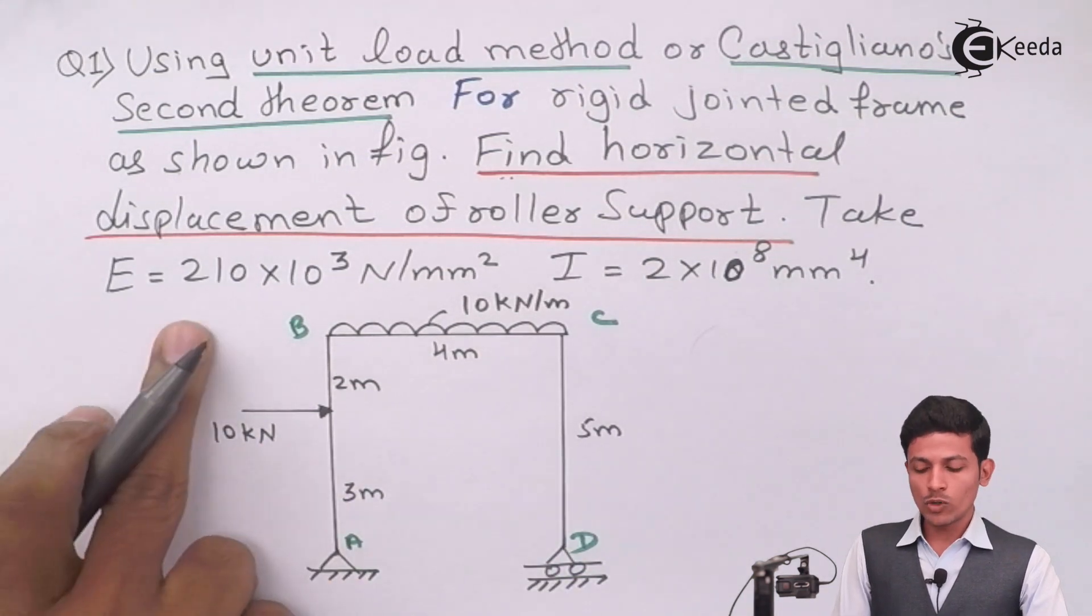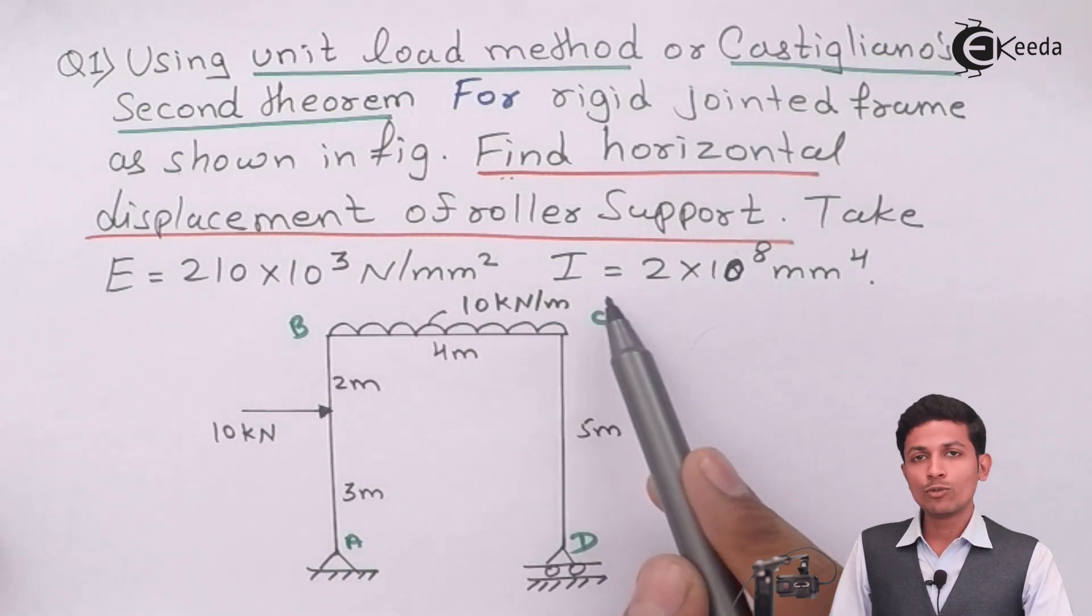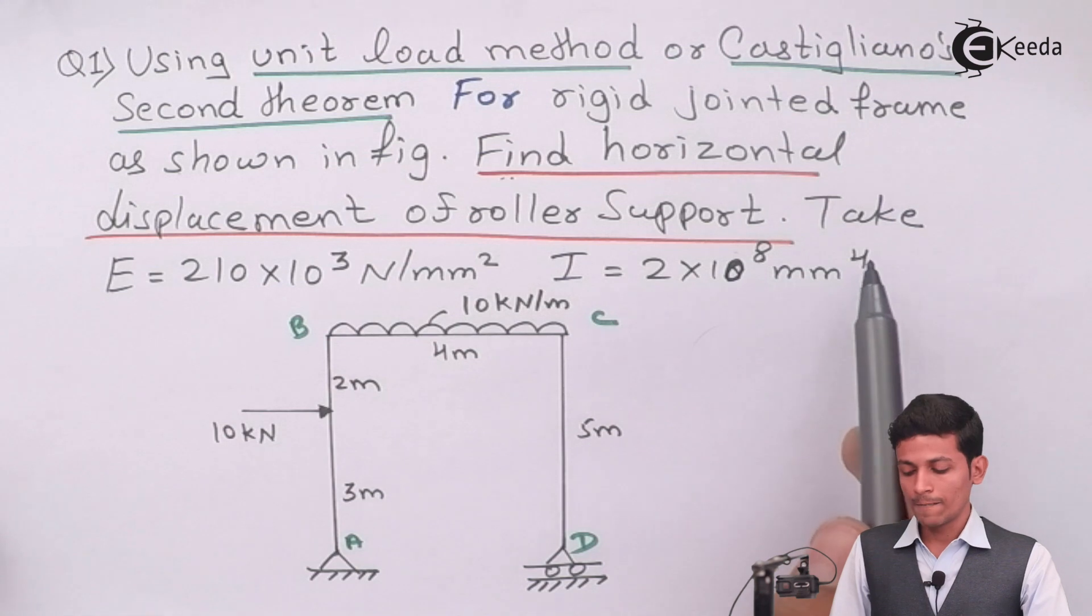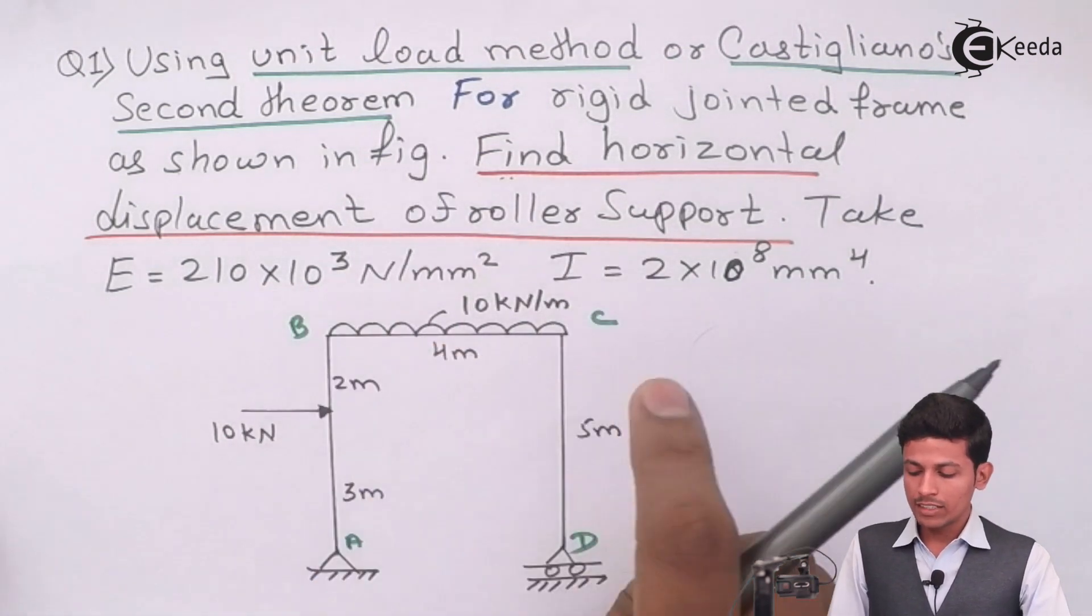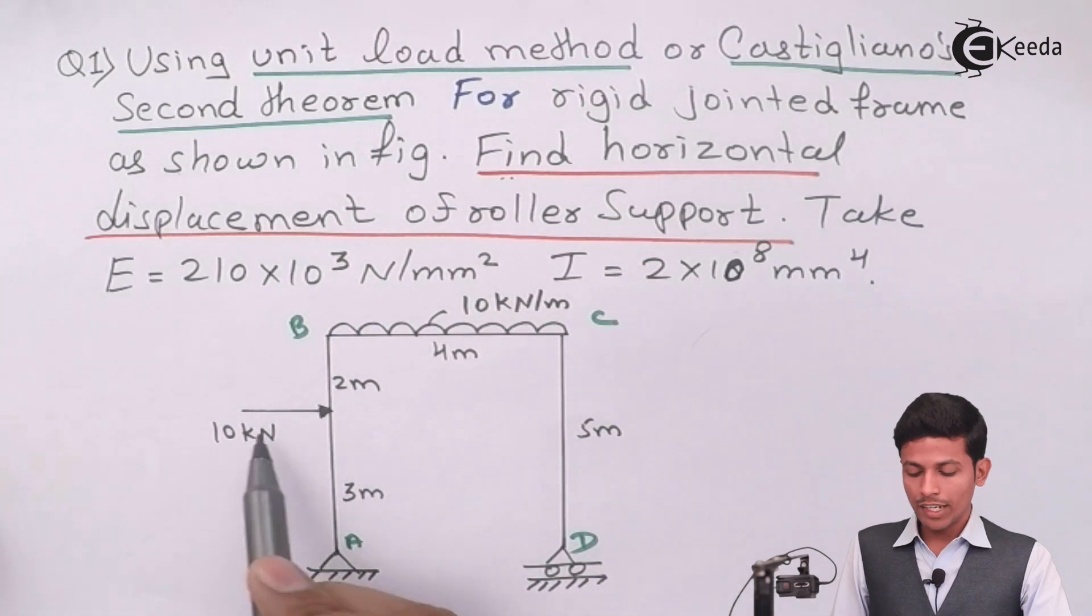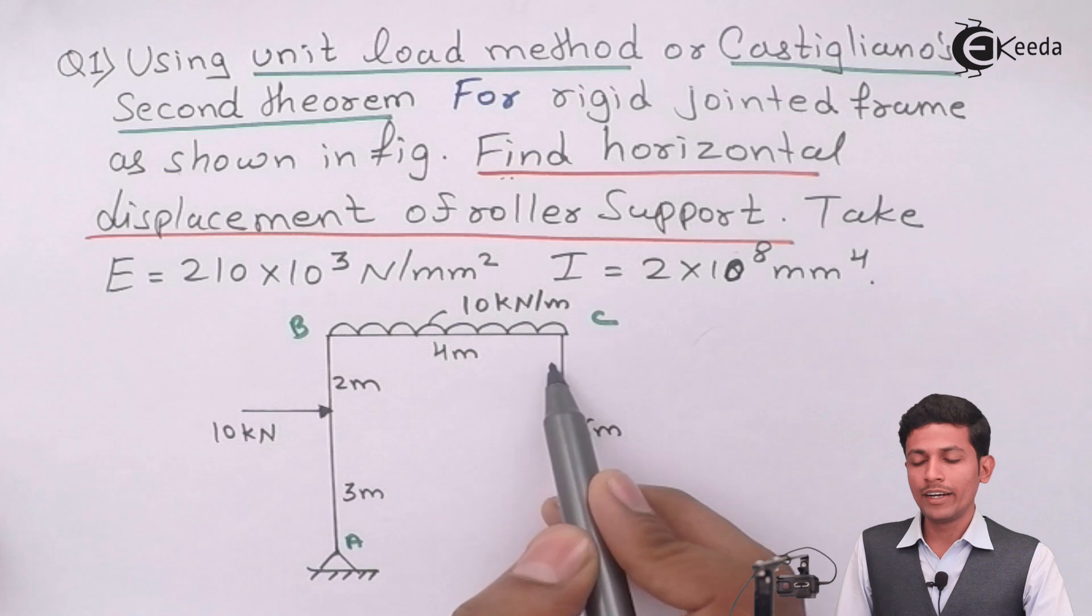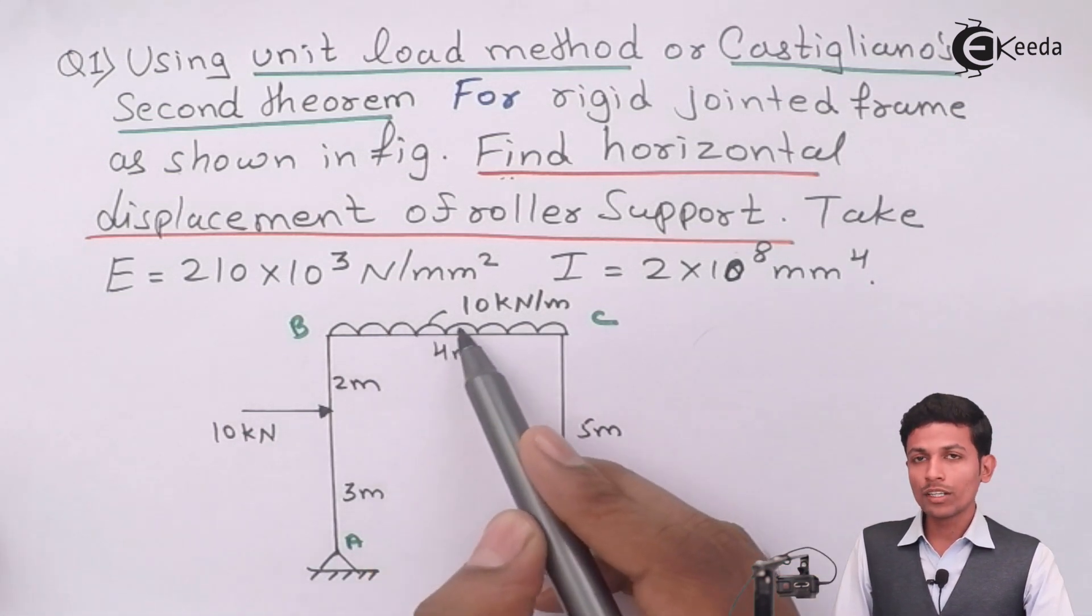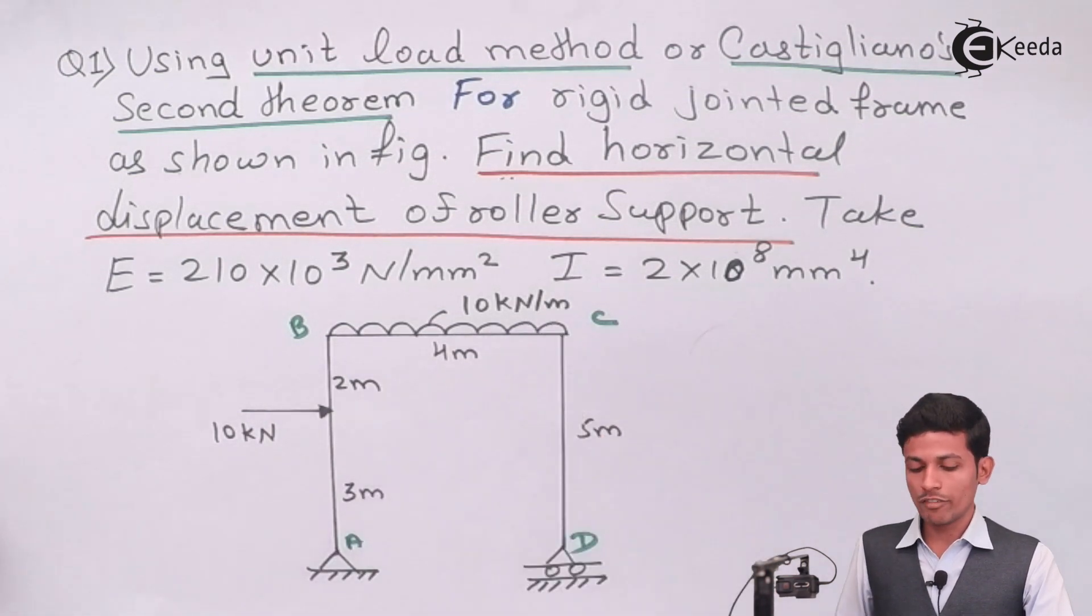Take E is equal to 210 into 10 raise to 3 Newton per mm square. I is equal to 2 into 10 raise to 8 mm raise to 4. This is your diagram given. This is a member A, B, C and D. Here given 10 kilo Newton. This is 3 meter and this is 2 meter. This one is 4 meter and this is 5 meter. And this is UDL over the span BC, which is 10 kilo Newton per meter.